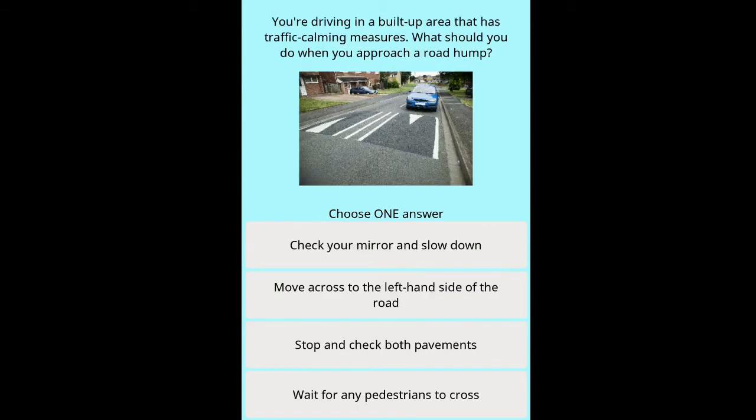Question: You're driving in a built-up area that has traffic calming measures — what should you do when you approach a road hump? Options: check your mirror and slow down, move across to the left-hand side of the road, stop and check both pavements, wait for any pedestrians to cross.